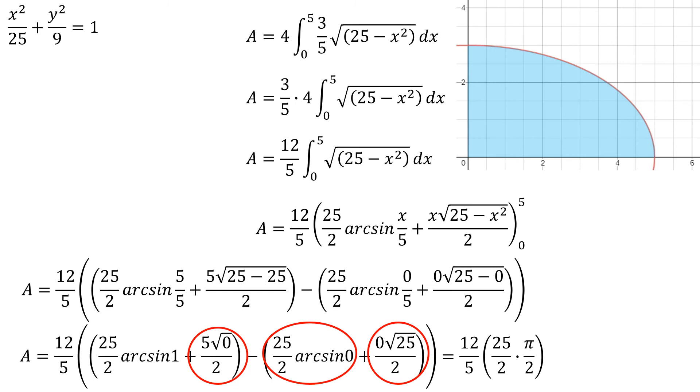25 over 5 becomes 5. 12 over 4 is 3. So I've got 3 times 5, which is 15. So 15 pi square units.